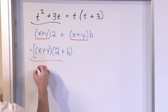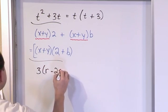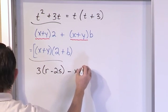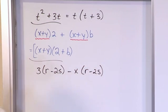Now what if you had something like 3 times (r - 2s) minus x times (r - 2s). So again we're looking at...